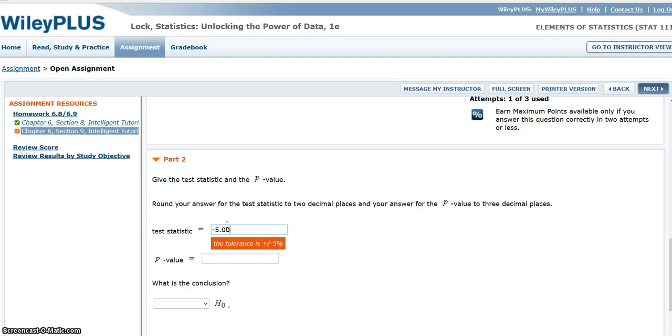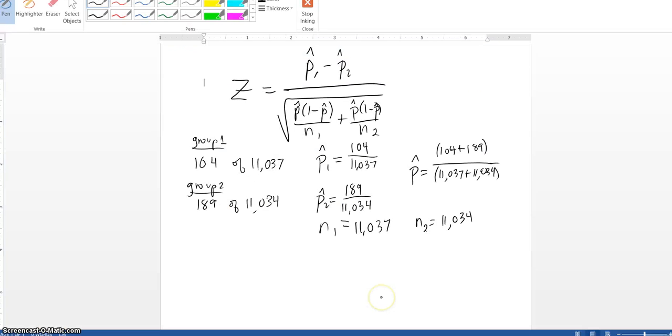Now, if I want to find the P value, I know that my test statistic Z is negative 5.00. Since my alternative hypothesis has a less than sign in it, I know I'm looking for the area to the left of my test statistic, and that will be my P value. So, my P value is going to be found with the normal CDF.